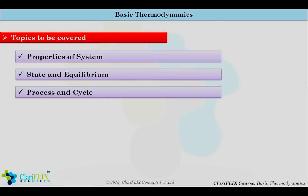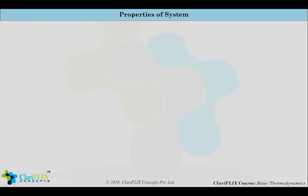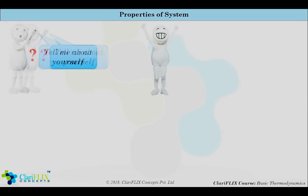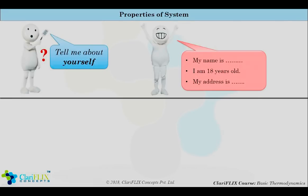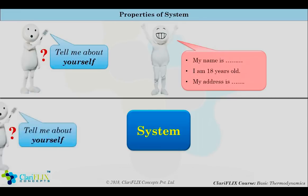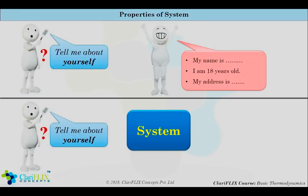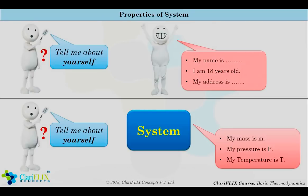Now let us begin with the properties of system. What if someone will ask you, tell me about yourself? Definitely you will answer my name is so and so, I am 18 years old and my address is so and so. But what will happen if someone will ask the same question to the system? System will say my mass is m, my pressure is p and my temperature is t. So all these parameters like mass, pressure, temperature are nothing but the properties of system, and many more properties are like conductivity, elasticity, etc.